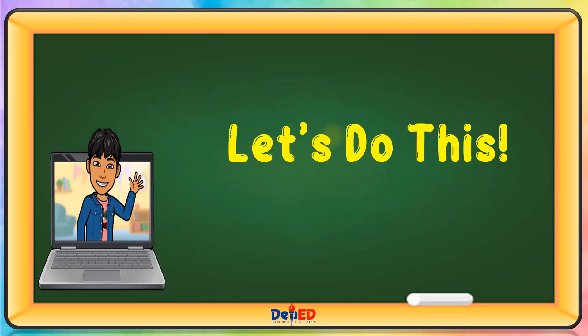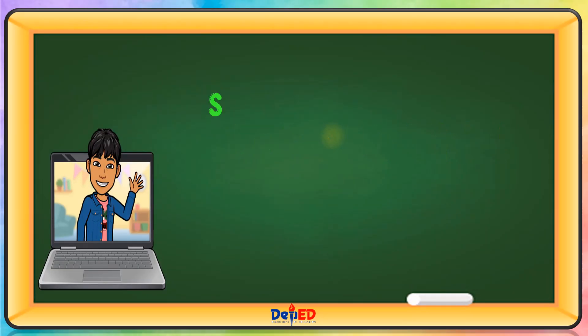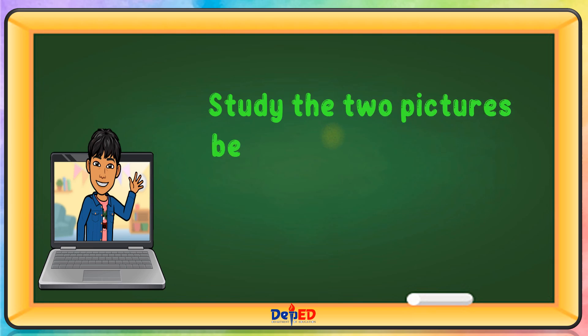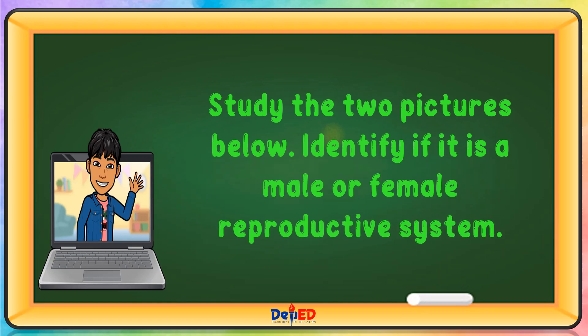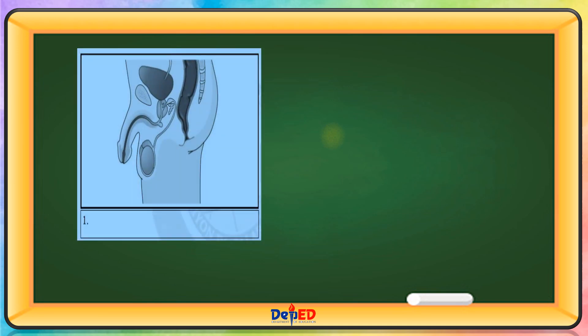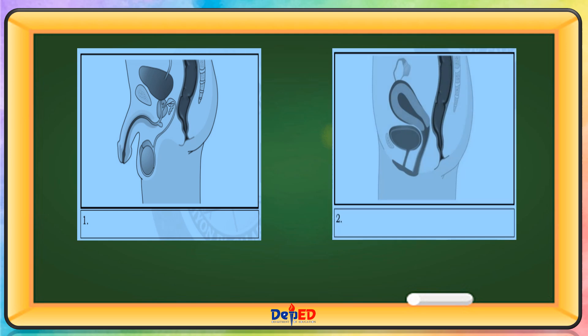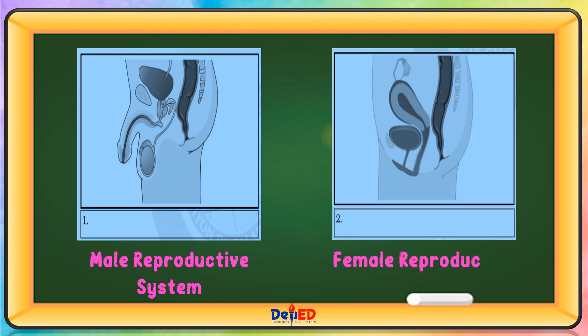Let's do this. Study the two pictures below. Identify if it is a male or female reproductive system. The first picture is the male reproductive system, while the second picture is the female reproductive system.